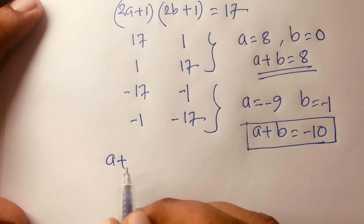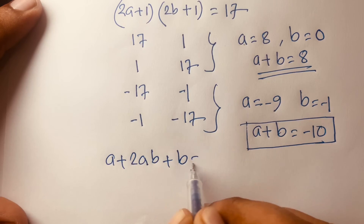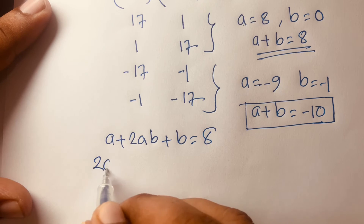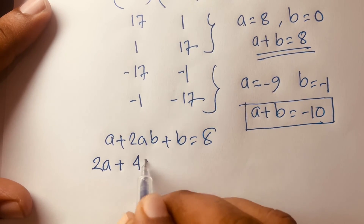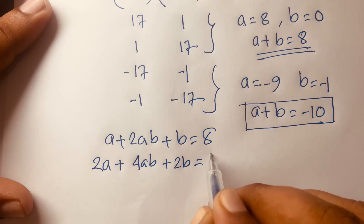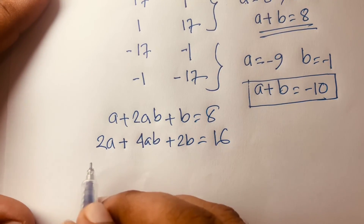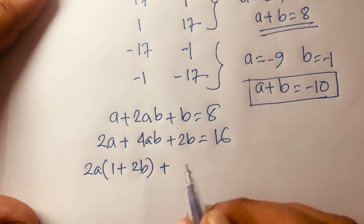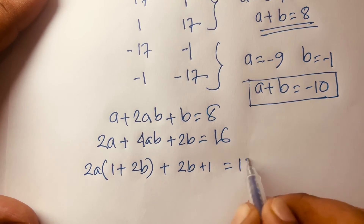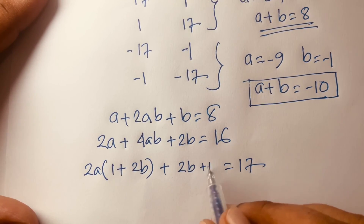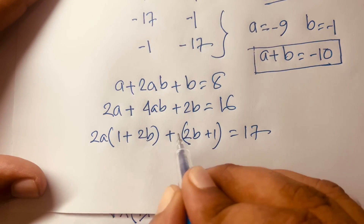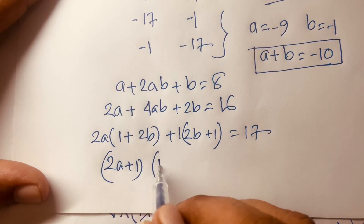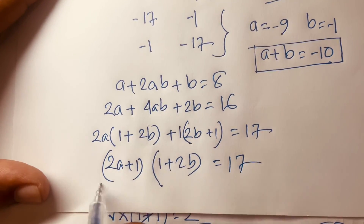Now I solve this question using another method. Our equation is a plus 2ab plus b equals 8. Multiply both sides by 2: 2a plus 4ab plus 2b equals 16. Factor: 2a times (1 plus 2b) plus (2b plus 1) equals 17, adding 1 to both sides. So (2a plus 1) times (1 plus 2b) equals 17.